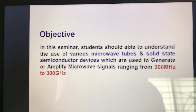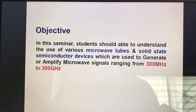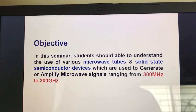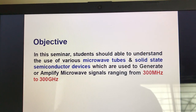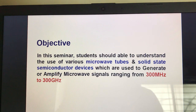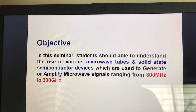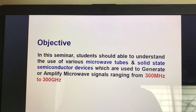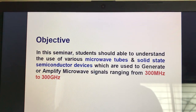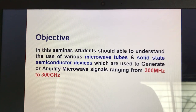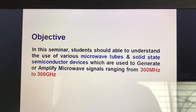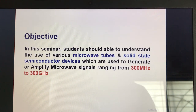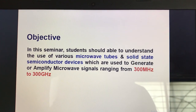Hello friends, today I am giving a seminar presentation on microwave active components. We will understand the various types of microwave tubes and solid state semiconductor devices. These microwave tubes and semiconductor devices operate in the 300 MHz to 300 GHz frequency range. The microwave frequency range is generally considered to start from 1 GHz.